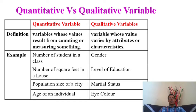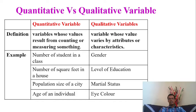The definition of a variable is a variable whose value results from counting or measuring something. A quantitative variable is one that involves counting or measuring. A qualitative variable is a variable whose value varies by attribute or characteristics. For example, a quantitative variable includes the number of students in a class.